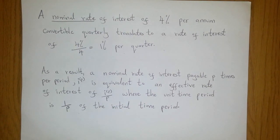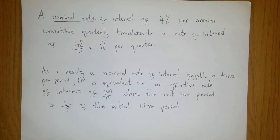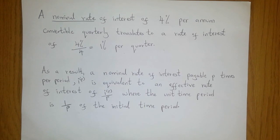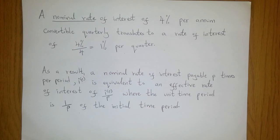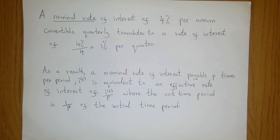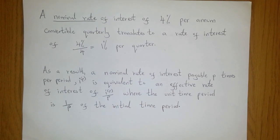A nominal rate of interest of 4% per annum convertible quarterly translates to a rate of interest of 1% per quarter. This interest of 4% being payable every quarter means that for every quarter we would have to pay 1%, so that for 4 quarters we get a total of 4% interest. What you have to keep in mind is that we are looking at compounded interest, such that the 1% interest received in the first quarter would go on to be compounded again for the second quarter, and during the third quarter you will be compounding the interest received in the first and second quarter as well.